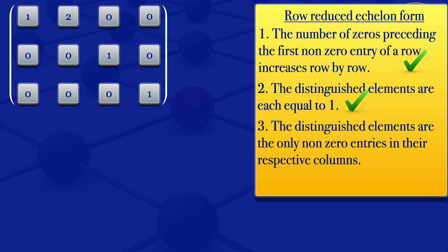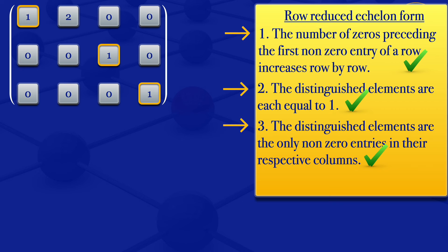So that's the matrix we are having. Now check if it satisfies condition number three: the distinguished elements are the only non-zero entries in their respective columns. We look at the distinguished element — it's a one and it's the only non-zero entry in column one. The next distinguished element is a one and the only non-zero entry in column three. The next distinguished element is a one and the only non-zero entry in column four. So condition number three has been satisfied, and all three conditions have been satisfied. This matrix has now been reduced to row reduced echelon form.